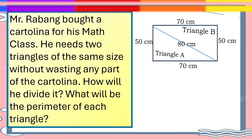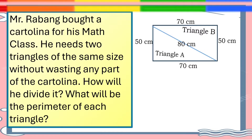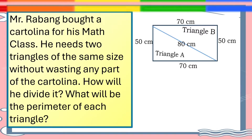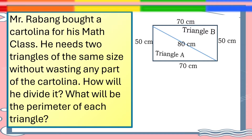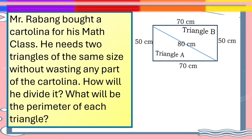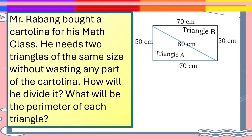Let's read, analyze, and solve the short story problem. Mr. Rabang bought a cartulina for his Math class. He needs two triangles of the same size without wasting any part of the cartulina. How will he divide it? What will be the perimeter of each triangle?